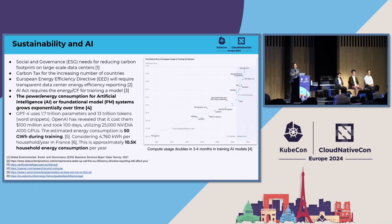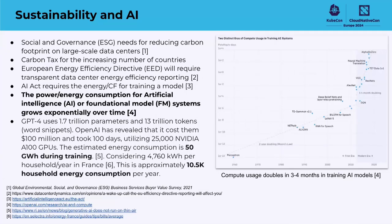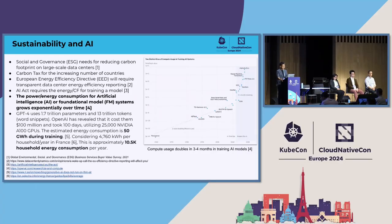On the company side, there is ESG environmental responsibility going to enterprises. You may already know about ESG requirements and carbon tax. Starting from some Northern American and Northern European countries, they are implementing more carbon taxes — if you generate more carbon, you pay more tax. One example is the European energy efficiency directive, which asks for transparent data center energy efficiency reporting.